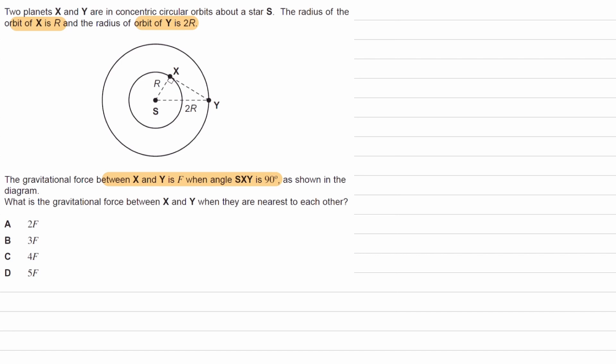We're asked to work out the gravitational force between X and Y when they are nearest to each other. If they were nearest to each other, then X could be here, and Y is in the position where it's in right now.